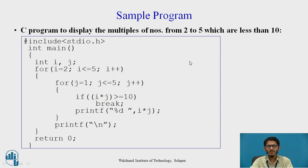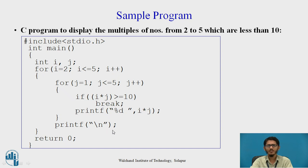This break condition exists because the problem statement requires multiples which are less than 10. If the product i times j reaches 10 or more, it breaks the innermost loop. If not, it prints that number using %d, replaced by i times j. The loop continues as long as j is less than or equal to 5. Once we come out of this loop, we print the next number's multiples on a new line. This process continues from number 2 to 5, printing each multiple less than 10 and breaking when it is not.